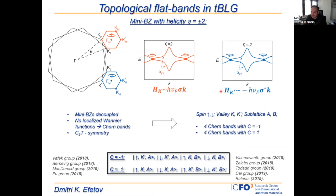Groups including Oscar Vafek, Andrew Bernevig, and Ashvin Vishwanath found that the Brillouin zones have non-zero helicity of plus two and minus two in different valleys. This is very different from single layer graphene where the winding number is zero. Therefore it's impossible to find localized Wannier functions. People now describe these bands as Chern bands: one can define four bands with Chern number minus one and four bands with Chern number plus one.